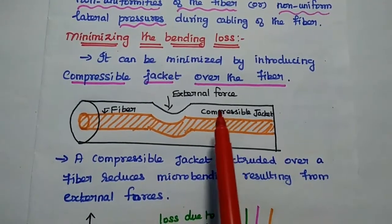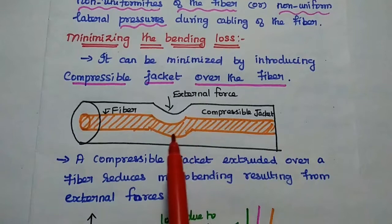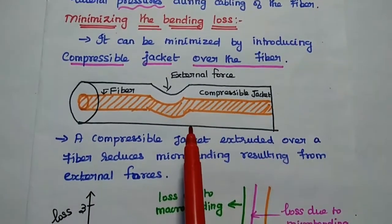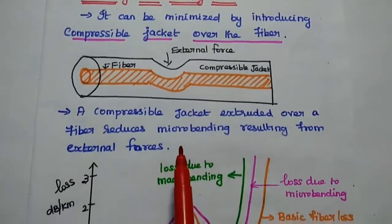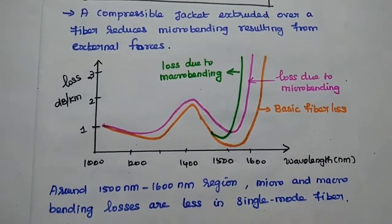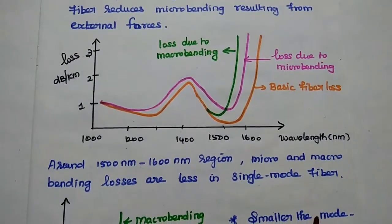It can be deformed but the inner core fiber is almost straight. This is how we can reduce micro bending losses. Next we are going to relate the loss with respect to the wavelength. Here we are going to compare three losses.